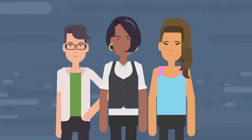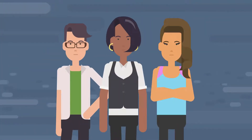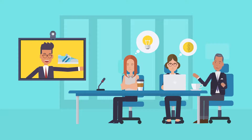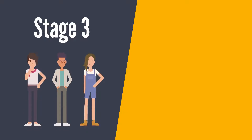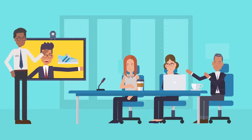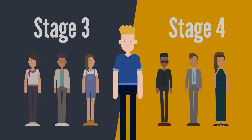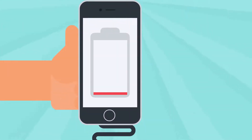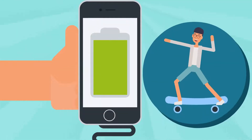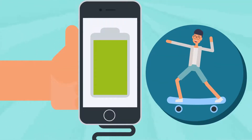Every potential customer is at a different stage in the buying process. An advertisement targeted at someone at stage 2 might move them up to stage 3, but it might not affect potential customers who are already at stage 4. Let's pretend you sell phone charging cases that can be used as an electric skateboard to make understanding the examples easier and a little bit more fun.